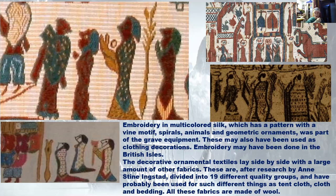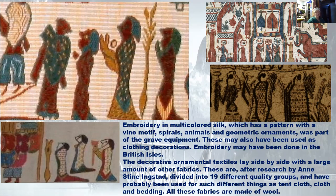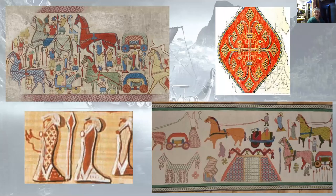Embroidery was not anything new to any people in the medieval period at all. It was also sort of a way to show prestige. If we go to the Oseberg tapestry specifically, we can see the amount of work that went into explaining and showing the decoration of clothing and how important it is. A lot of it is done in silk, and embroidery is found on almost every single tapestry from that period, including the Bayeux Tapestry.